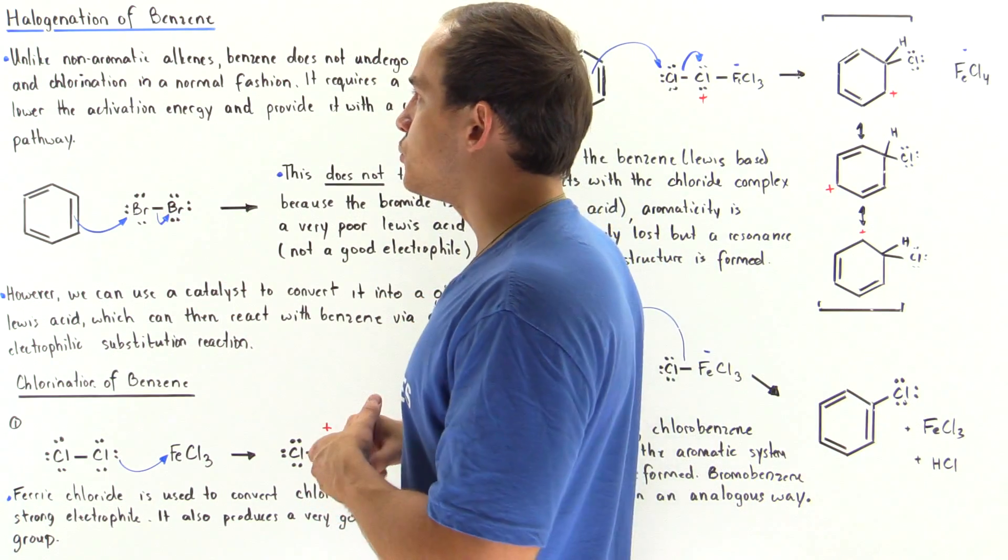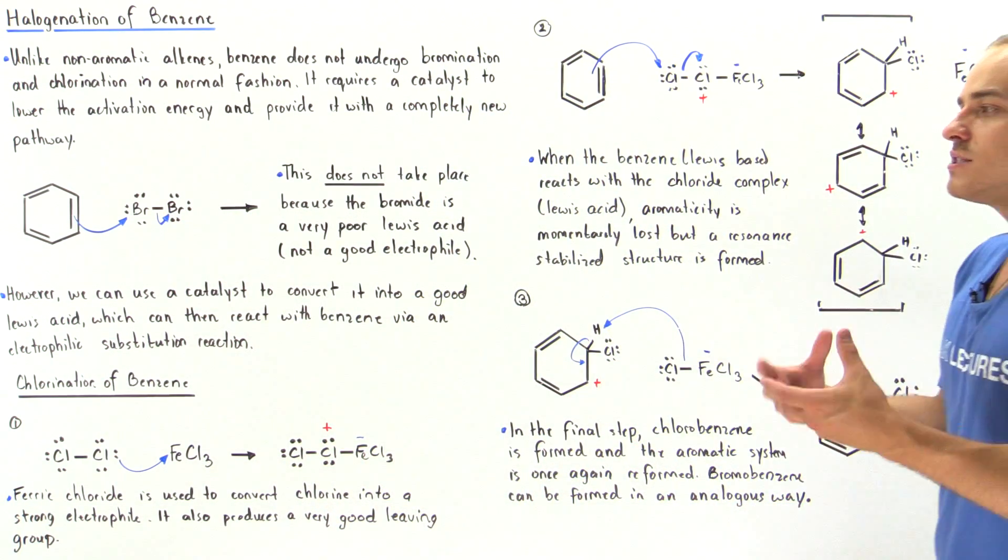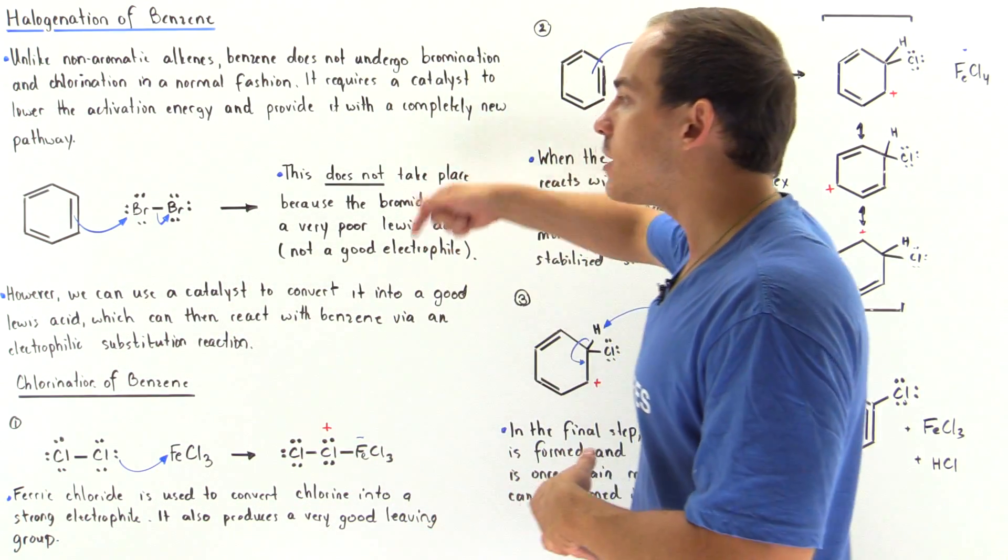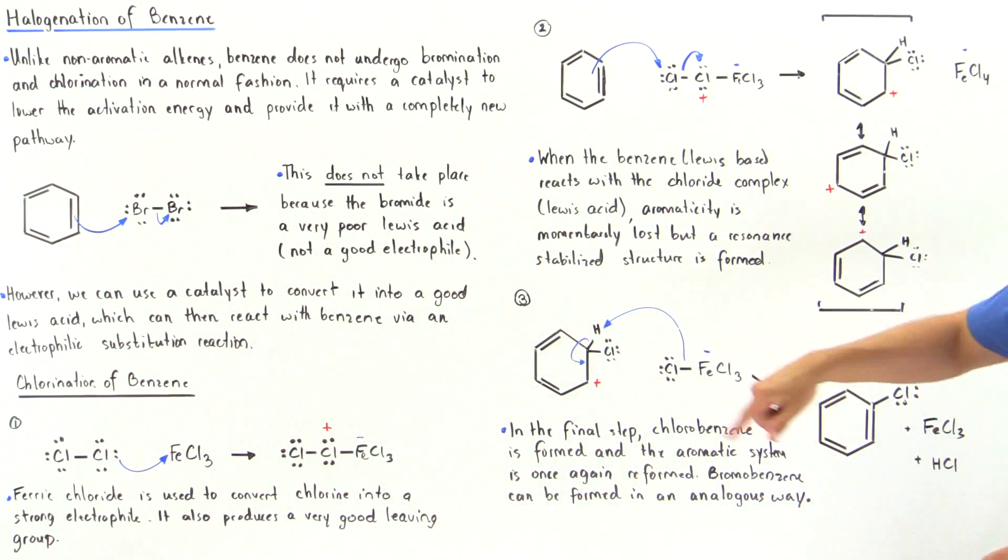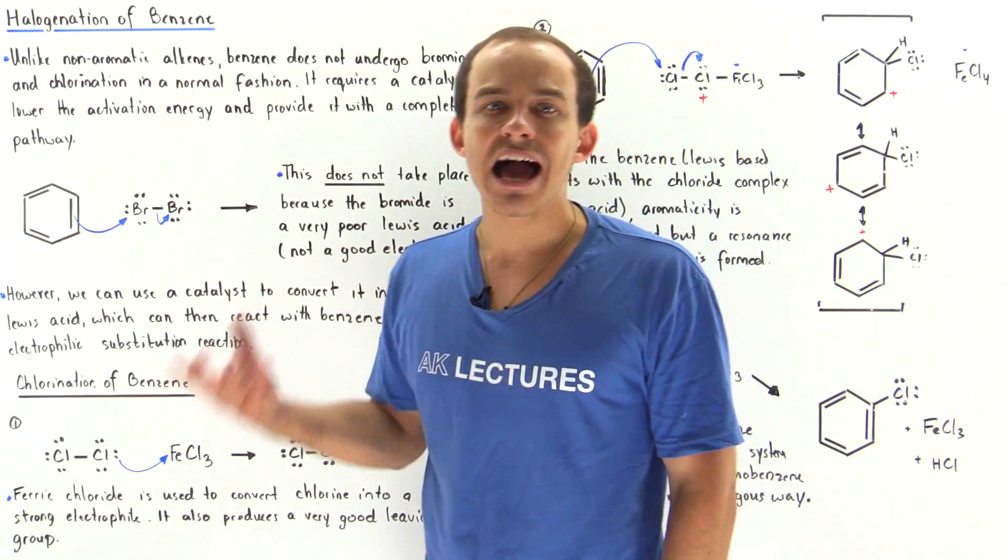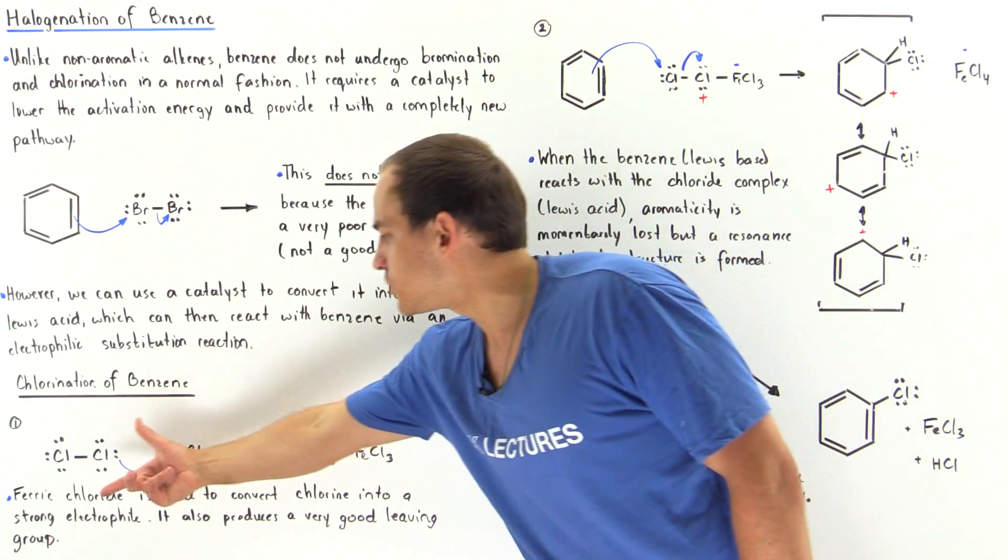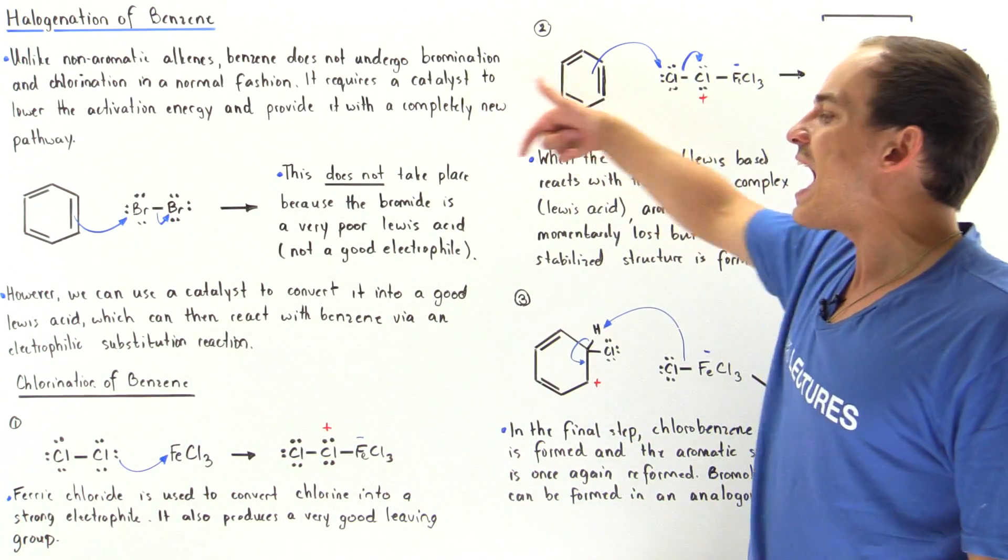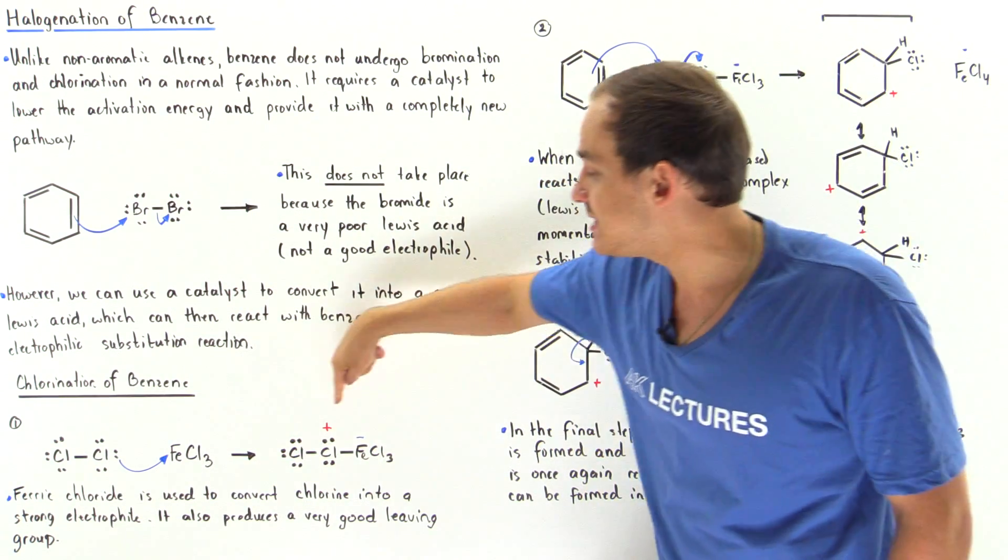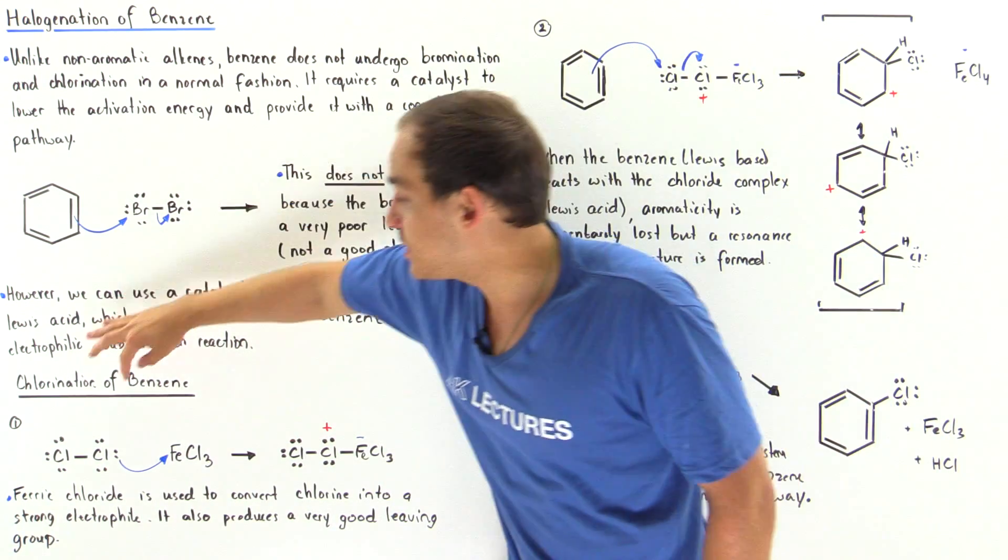For our benzene to actually react with a diatomic halogen, for us to undergo an electrophilic substitution in which one of the H atoms is replaced with a halogen, we have to use a catalyst. What the catalyst does is it gives us a completely new pathway in which we have a lower activation energy, because now we have a weak bond.